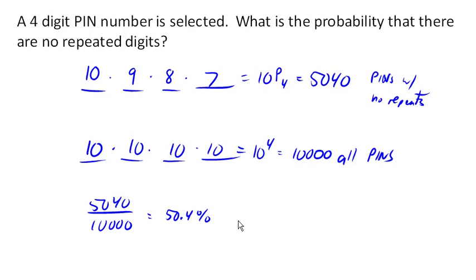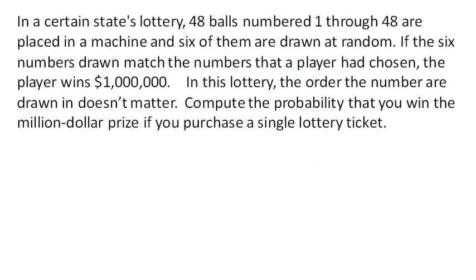So now let's look at a lottery problem. In a certain state's lottery, we got 48 different numbers, and six of them are drawn at random. The player gets to choose six numbers, and if their six numbers match, they win a million dollars. And the order doesn't matter in this particular lotto, so we're not playing Powerball. Let's see if we can find the probability that we win that million dollar prize if we purchase a single ticket.